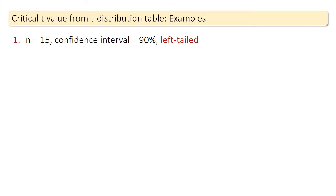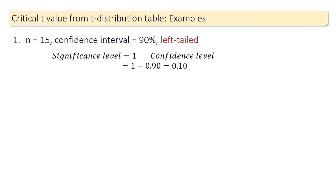In this example, the distribution is left-tailed, the significance level is 0.10, and the degrees of freedom is 14.